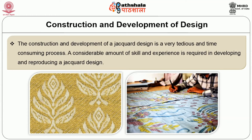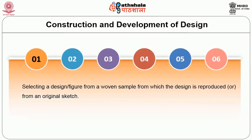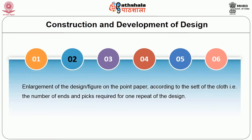Once the designer has a base motif in mind, the first stage is the selection of the design or figure for the woven sample. The second stage is enlargement of the design or figure on the point paper. The selected motif has to be transferred from the photograph or from a fabric onto the point paper, taking into account the ends and picks and the set of the fabric. The small photograph would have to be enlarged on a larger graph paper according to the number of ends and picks required for one repeat of the design.